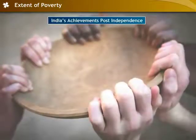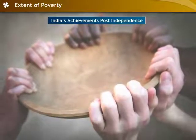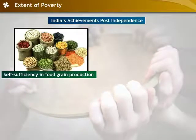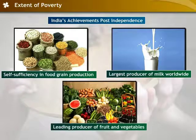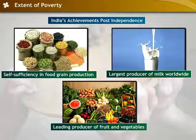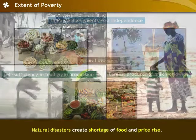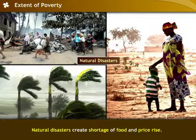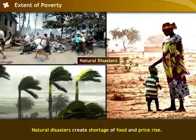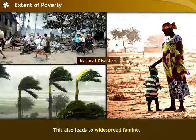On the contrary, India has also achieved a lot. India is self-sufficient in food grain production and is ranked first in milk production, while fruit and vegetable production has increased. However, a discrepancy in the distribution system deprives many of food. During natural disasters, crops suffer leading to shortage of food and rise in prices. The poor cannot afford the raised prices and suffer from starvation, thus leading to famine.